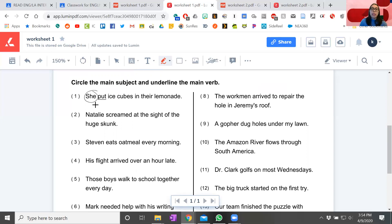So let's do just one more on worksheet one. This one says Natalie screamed at the sight of the huge skunk. So who did it in the sentence? It was Natalie. So we're going to circle Natalie. And I know it's hard to circle on these things. If it doesn't look nice, as long as we can still tell. And then what did Natalie do? She screamed. So we're going to underline the word scream. That's all you have to do.